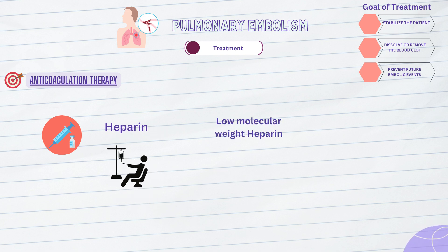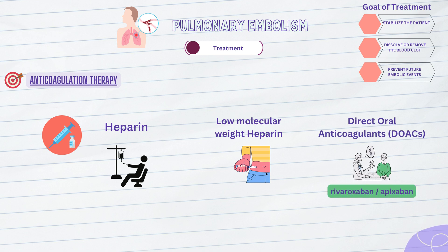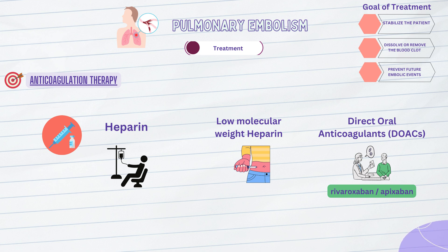Low molecular weight heparin, LMWH, such as enoxaparin, is another commonly used anticoagulant with a more predictable anticoagulant effect and can be administered subcutaneously. Direct oral anticoagulants, DOACs, such as rivaroxaban or apixaban, are newer oral medications that offer convenience with fixed dosing and do not require regular blood monitoring. Anticoagulation therapy is typically continued for several months to prevent recurrent blood clots, with the duration depending on the underlying cause of the pulmonary embolism and individual patient factors.